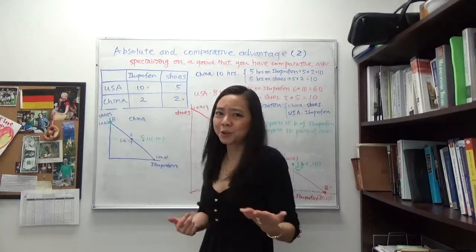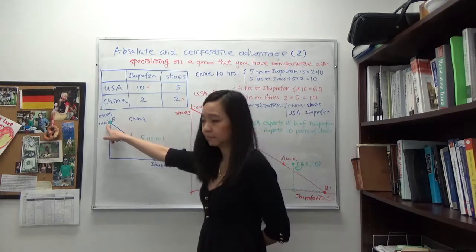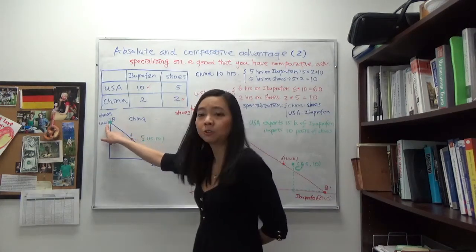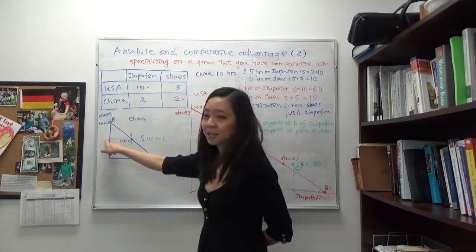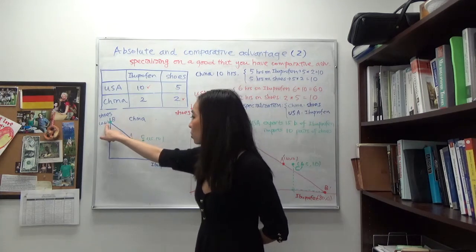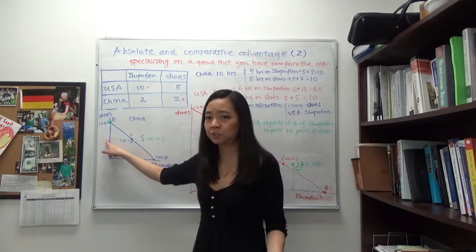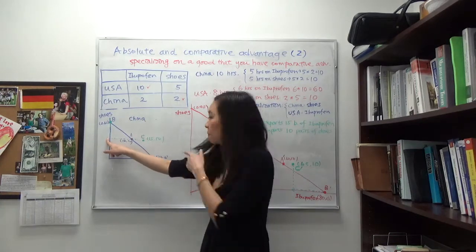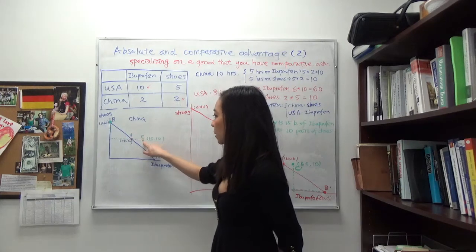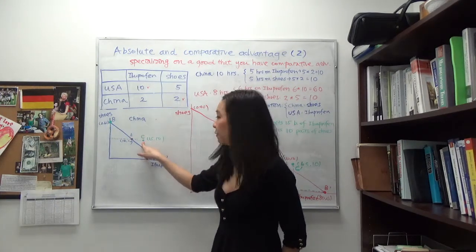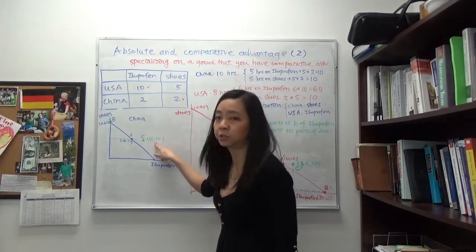Does China lose out? No — it also gains from trade. Starting at point B, China ships ten pairs of shoes to the US, so we move down ten units. Then the US ships 15 bottles of ibuprofen to China, so we move right until we hit point C: 15 bottles of ibuprofen and ten pairs of shoes. China also gains from trade.